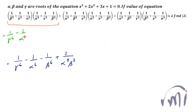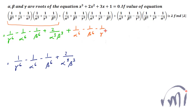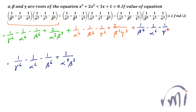This gives 1/γ⁶ − 1/α⁶ − 1/β⁶ + 2/(α³β³). Similarly, the second bracket can be written as 1/α⁶ − 1/β⁶ − 1/γ⁶ + 2/(β³γ³), and the third bracket gives 1/β⁶ − 1/α⁶ − 1/γ⁶ + 2/(α³γ³).